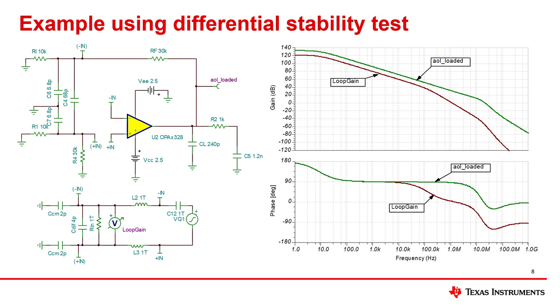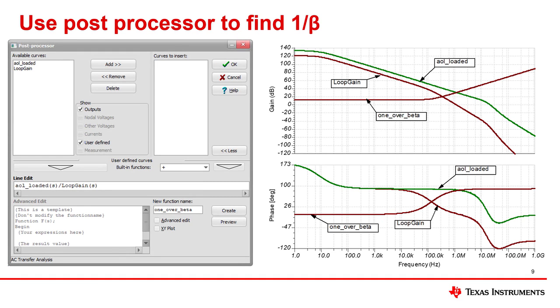To complete the stability analysis, it's really not necessary to display the 1 over beta curve, but it is informative. This curve can be generated with post-processing. Here we show how to use post-processing to generate the 1 over beta curve. This is done by dividing AOL loaded by loop gain.